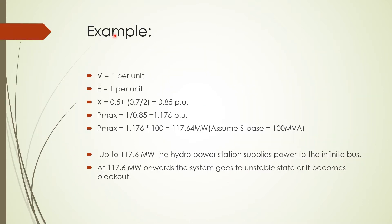Before we verify the problem using PowerWorld Simulator, let me solve a numerical example. It is assumed that the voltage at the infinite bus and the generator end is 1 per unit. The transfer reactance connected between the source and load end is 0.85, comprising 0.54 for the transformer and 0.74 for each double transmission line. The maximum power transmitted is 1.176 per unit, which on a 100 MVA base equals 117.64 megawatt. Up to 117.6 megawatt the hydro power station can supply power to the infinite bus; beyond that the system reaches an unstable state and blackout occurs.